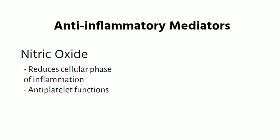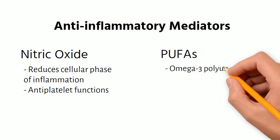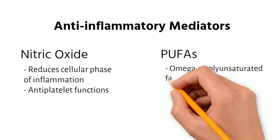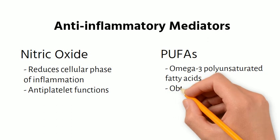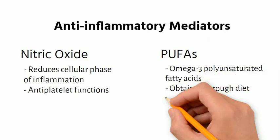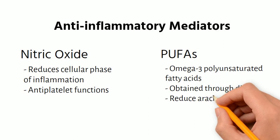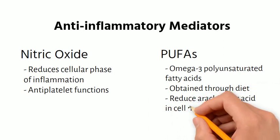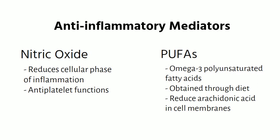Finally, we have PUFAs — omega-3 polyunsaturated fatty acids that can only be obtained through diet. These healthy lipids replace arachidonic acid in cell membranes, thereby reducing the substrate for production of leukotrienes and prostaglandins. Be sure to take in plenty of healthy fats through foods such as fatty fish, flaxseed, canola oil, green leafy vegetables, walnuts, or soybeans.